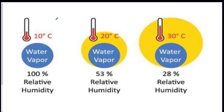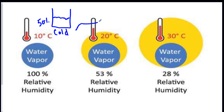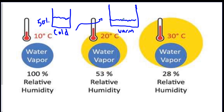Relative humidity is the percentage full of water vapor of an air mass. For example, if I have a cold air mass represented by a container and fill it halfway with water vapor, that would be 50% relative humidity. Now if I heat this up, the container gets much bigger because warm air can hold more water vapor, and if I put the same amount of water in it, it's no longer half full — same amount of water, bigger container — so relative humidity drops as I heat up the air mass.